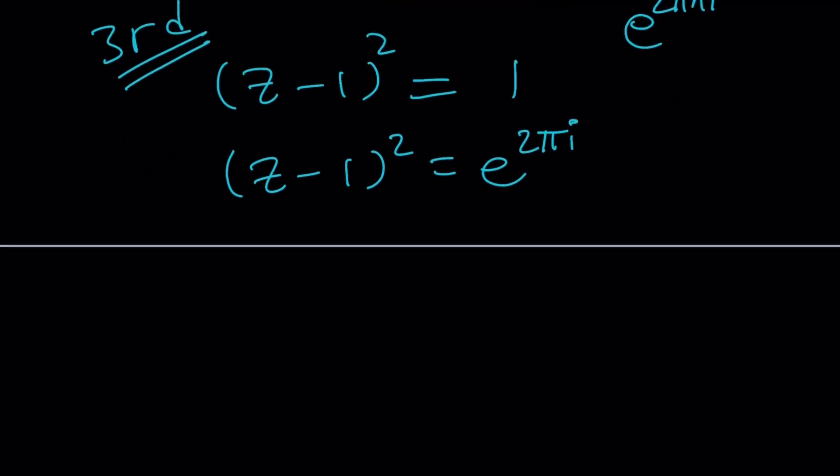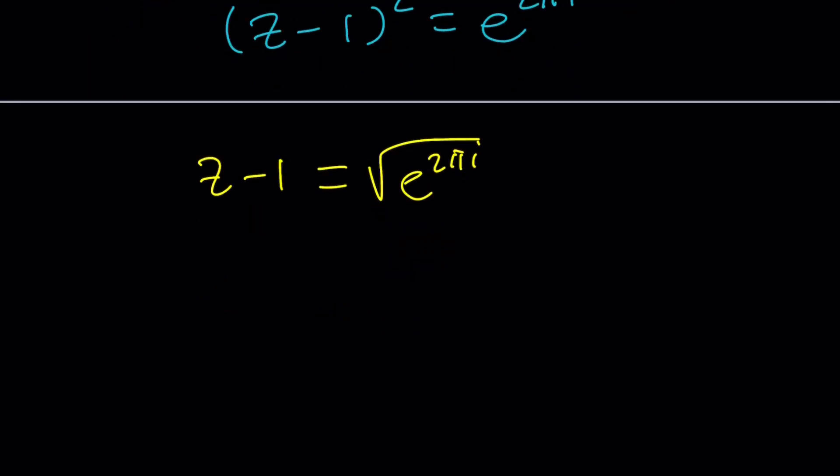So now let's go ahead and square root both sides. We get z - i = ±√(e^(2πi)). But let's just take the square root of this number once. And then this is going to be e^(πi), because you are supposed to cut the angle in half, the de Moivre's formula.